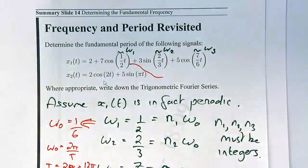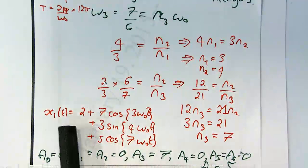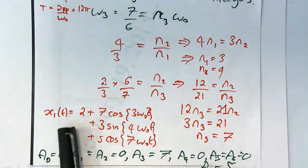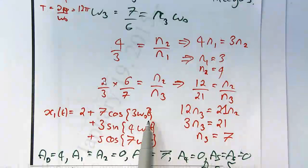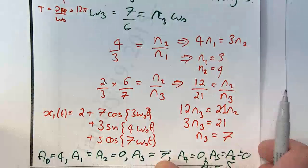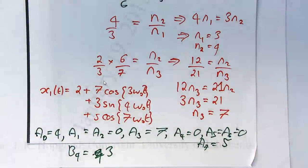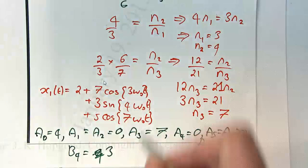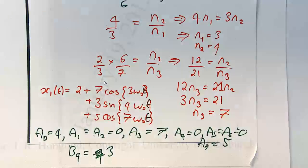There was a typo right at the end. If you went back to the bottom of your notes, when I wrote out x1 of t, x1(t) is supposed to be 2 plus 7 cos 3 omega_0 t. I forgot to put the t in, but there was a t in the expression at the top of the page, so obviously there should have been a t at the bottom.